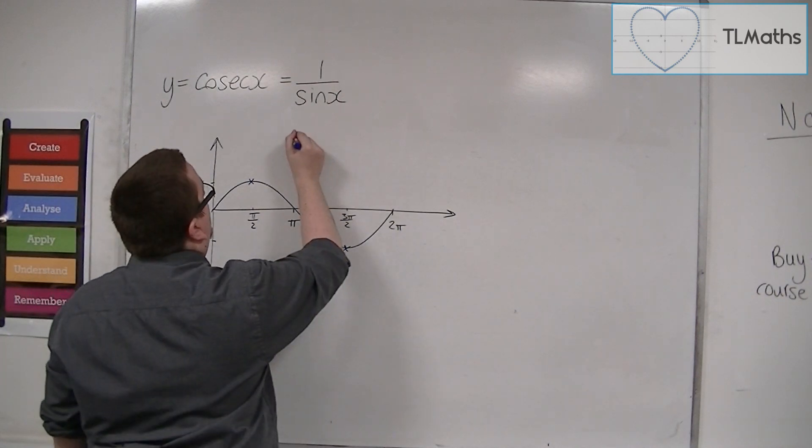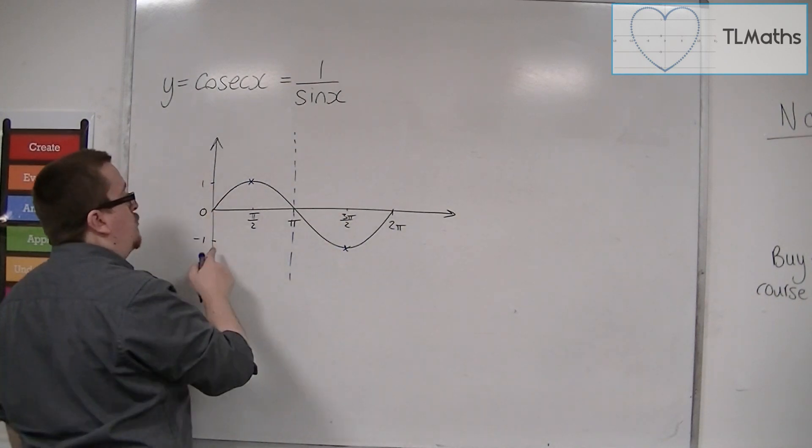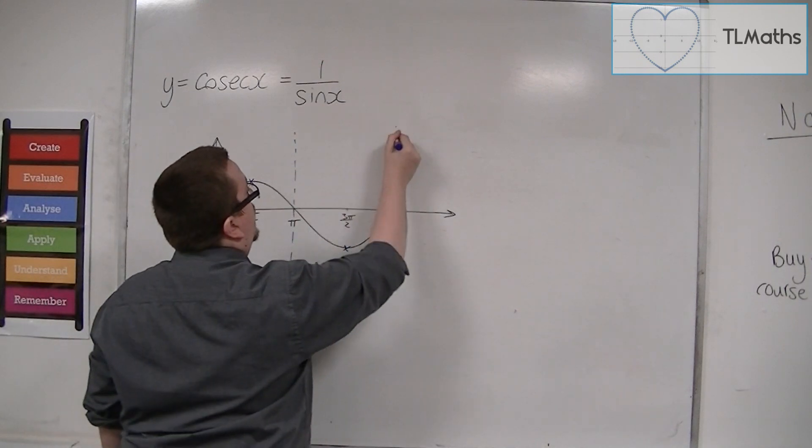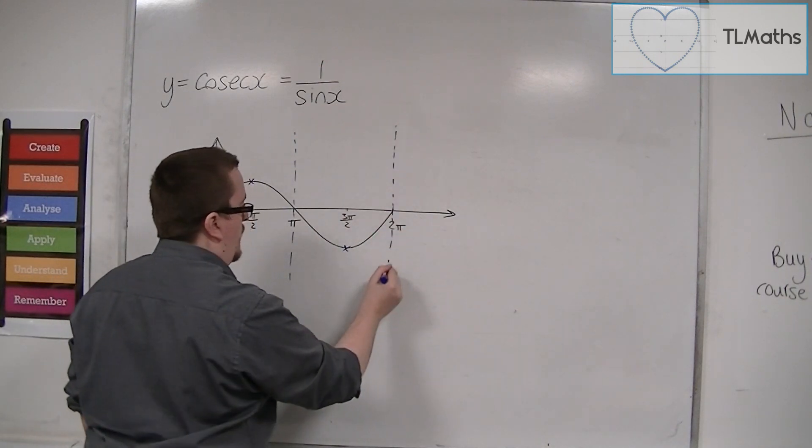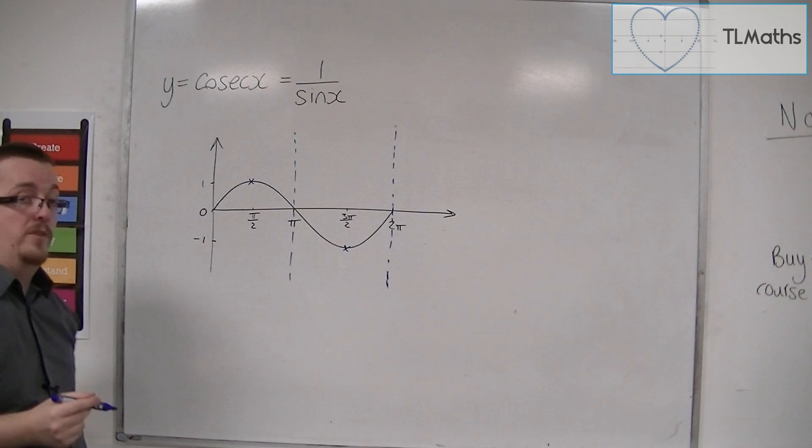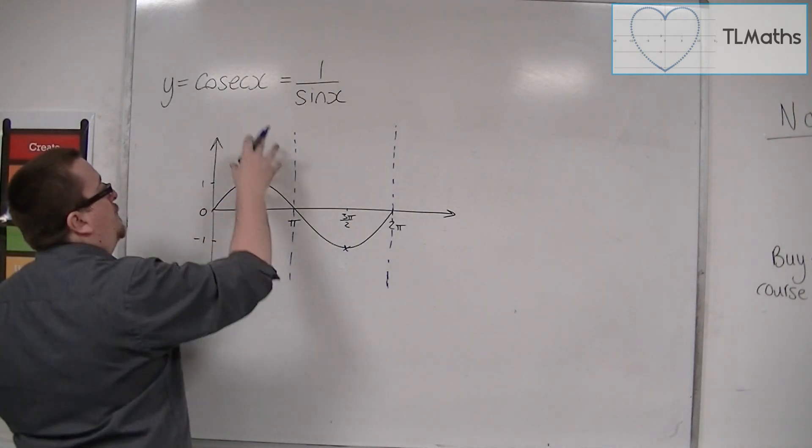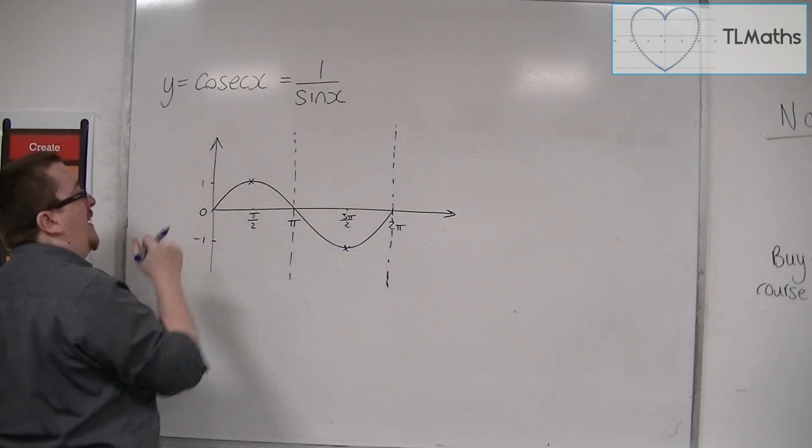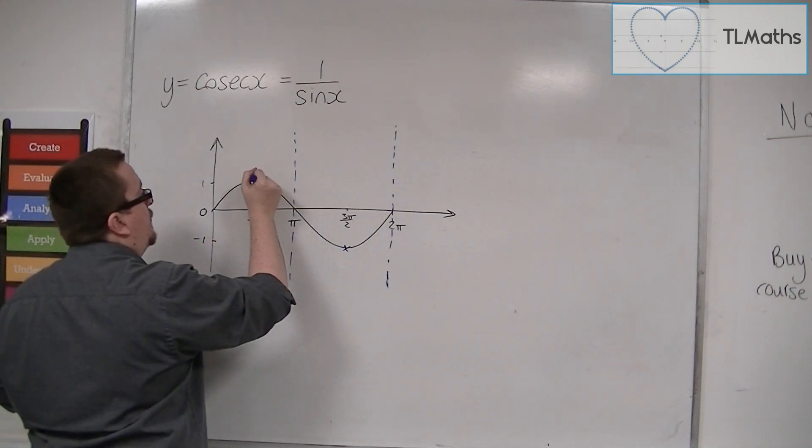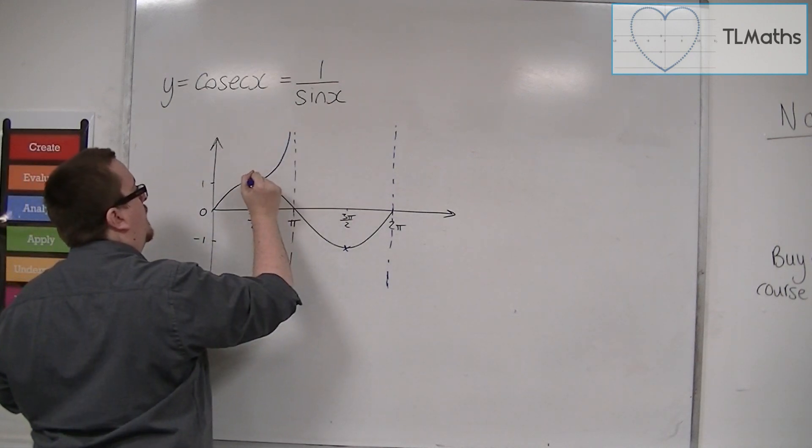And so we have an asymptote at 0, π, 2π, 3π, 4π, 5π, and so on and so forth. So in order for the curve to tend towards those asymptotes, the curve must look something like this.